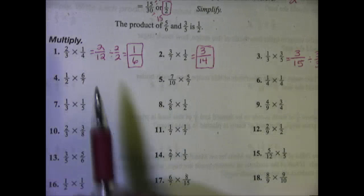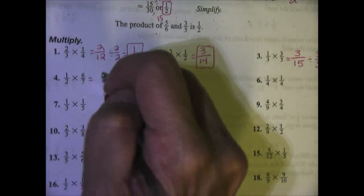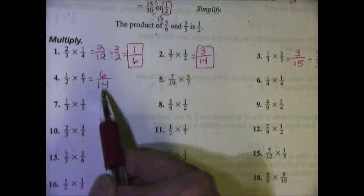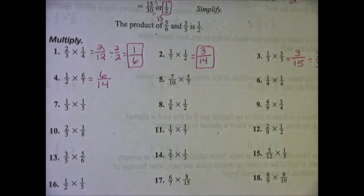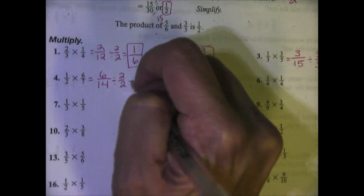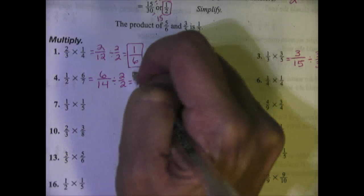Let's look at number 4. 1/2 times 6/7. 1 times 6 is 6, 2 times 7 is 14. They're both even so I know they divide by 2. Let's divide both by 2. We get 6 divided by 2 is 3 and 14 divided by 2 is 7.